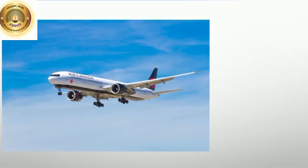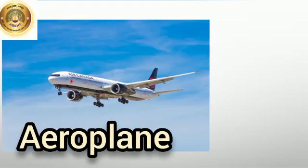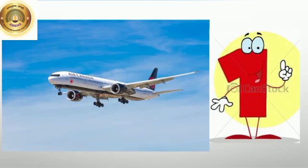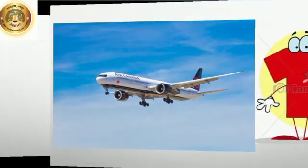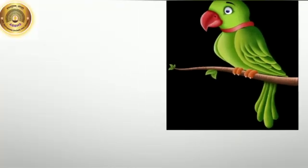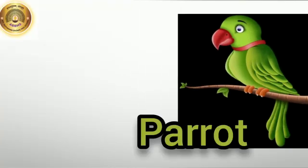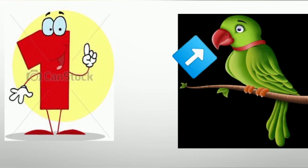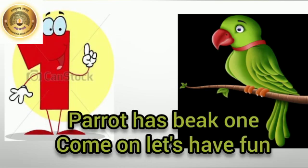Now, tell me what you see on this screen. This is an aeroplane. How many aeroplanes are here? One aeroplane is here. Now, what is this? This is a parrot. And how many beaks does the parrot have? One.